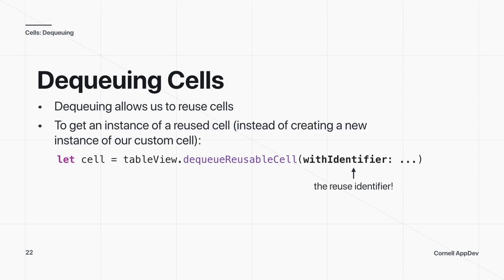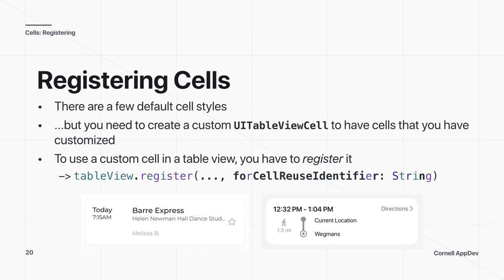To reuse cells, we use dequeuing: tableView.dequeueReusableCell(withIdentifier:), passing the reuse identifier. This retrieves an instance of a cell that has gone off screen, helping with memory and performance. The reuse identifier isn't for a specific cell instance, but a type — so any cell of that type that's scrolled off screen can be reused.